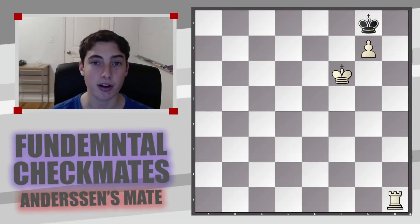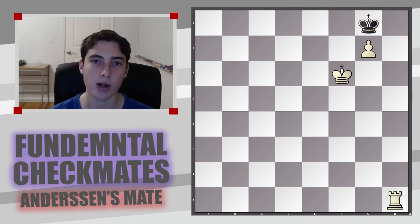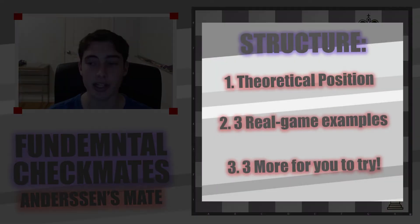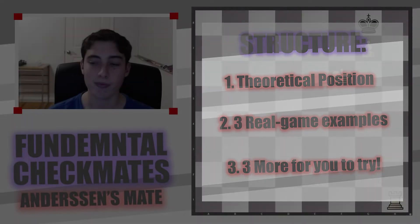Welcome back to my masterclass on checkmating your opponent. Today we are going through the second fundamental checkmate that you need to know, which is called Anderson's mate. We're going to start by looking at the theoretical definition of Anderson's mate, then we'll look at three examples together, and in the end I'll give you three more examples for you to try by yourself.